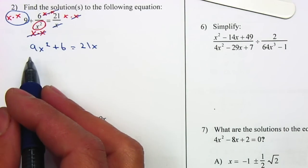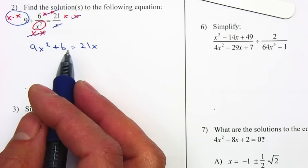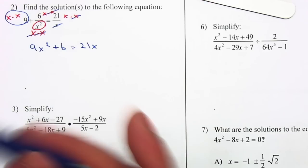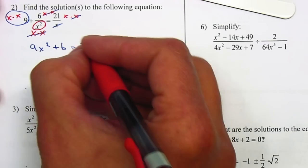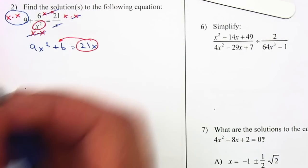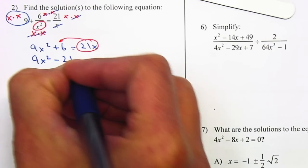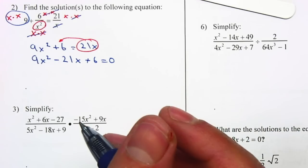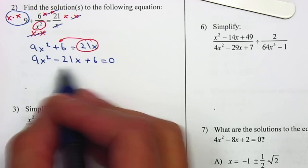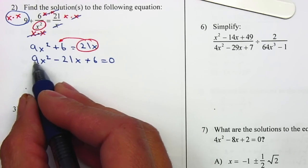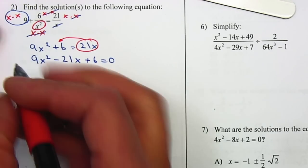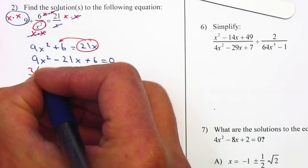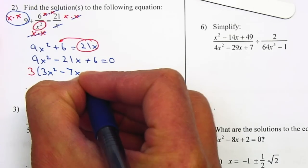I have a quadratic equation, so I make it equal to 0. Moving 21x to the left gives me 9x² - 21x + 6 = 0. First, take out a common factor — 3 divides 9, 21, and 6, and not all terms have x, so: 3(3x² - 7x + 2) = 0.